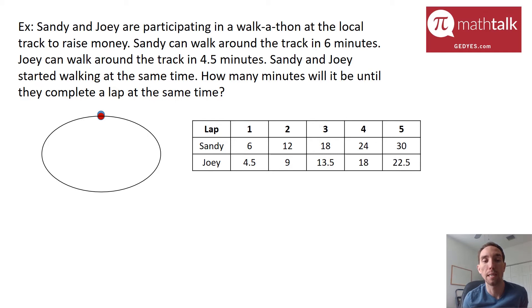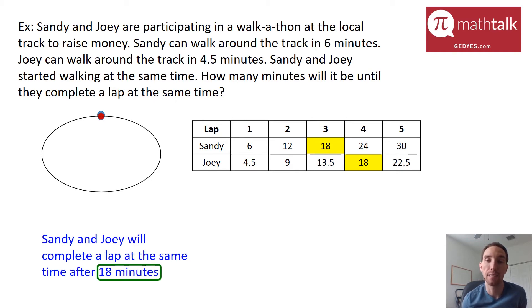we want to look for when the number of minutes in one of Sandy's laps equals the number of minutes in one of Joey's laps. I can see that there's 18 minutes in both of their charts. It took Sandy only three laps and Joey four laps, but they both finished at 18 minutes. So after how many minutes will they complete a lap at the same time? The answer is after 18 minutes.